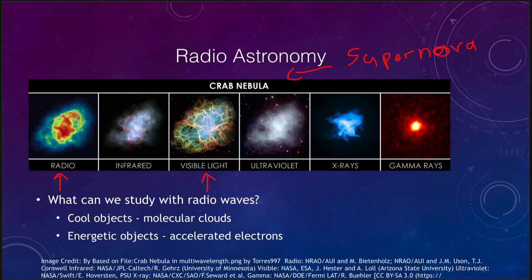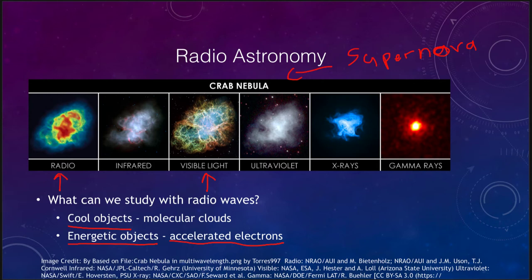What kinds of things can we study in radio astronomy? We can look at very cool objects such as molecular clouds, which are very cold and not giving off much visible light, but are giving off radio waves that we can detect. However, we can also detect very energetic objects, like the Crab Nebula, where accelerating electrons give off a type of radio radiation called synchrotron radiation, which can then be detected by a radio telescope. So not only do you detect cool objects, but you can detect very energetic objects as well. The big key is that you are getting a completely different picture of the universe.